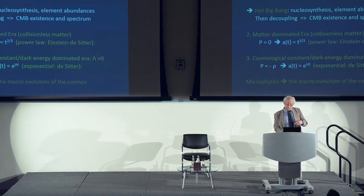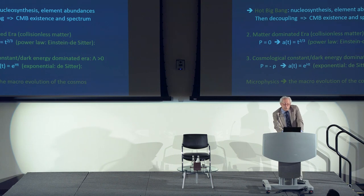As the universe cooled, the tight coupling between matter and radiation broke because matter was no longer ionized — it became atoms which do not couple to radiation. The black-body radiation then decoupled, and from that point matter and radiation went their separate ways. This sequence was: radiation-dominated hot Big Bang era, then decoupling, then matter and radiation separated.